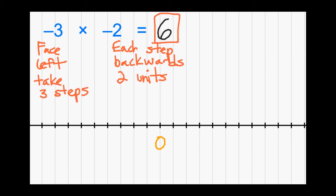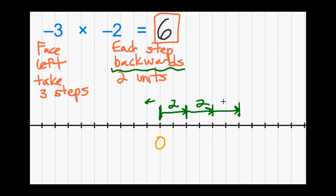We start at zero, facing left toward the negatives, and walk backwards. Each step is two units long but we're walking backwards. Step one, step two, step three — each two units long walking backwards. After three steps we end at 2, 3, 4, 5, 6 — we successfully ended at positive 6.